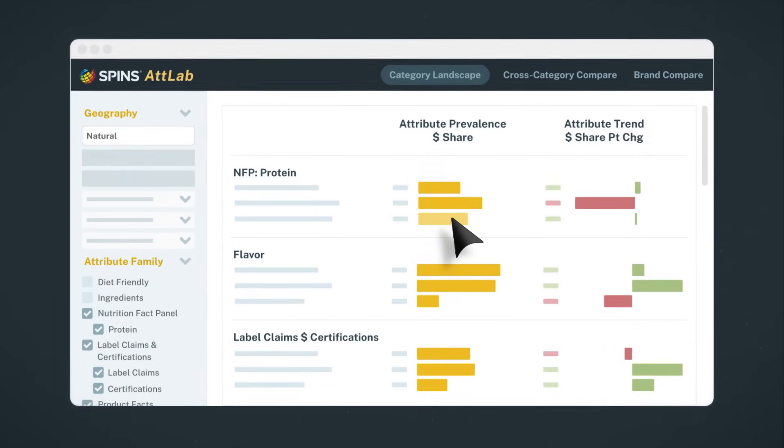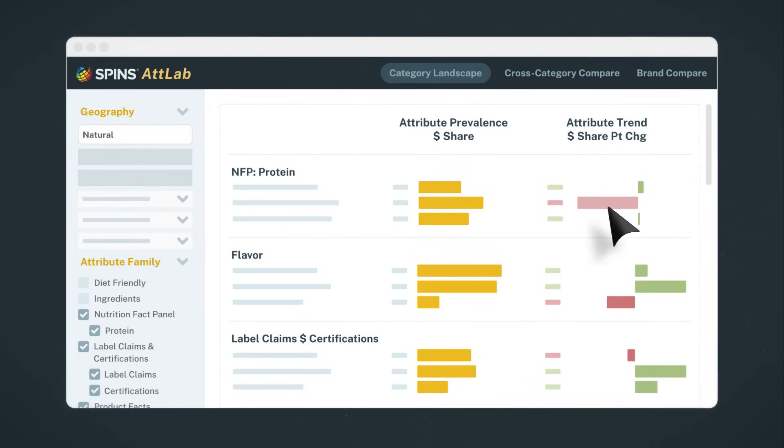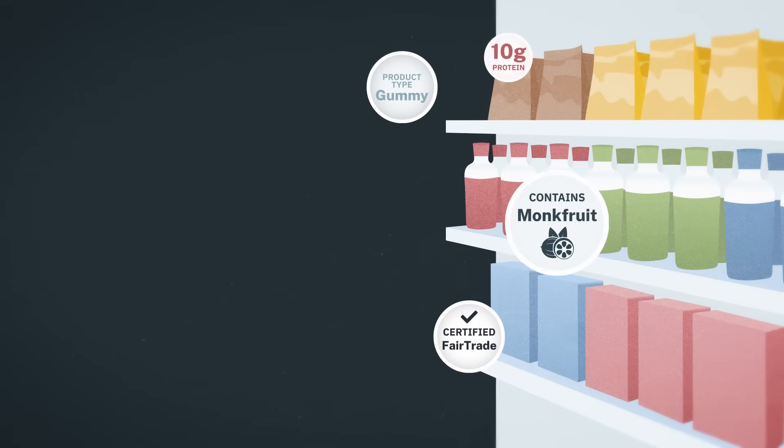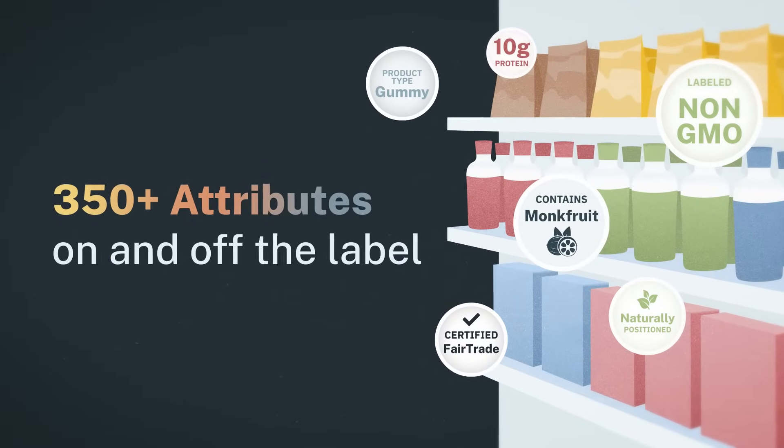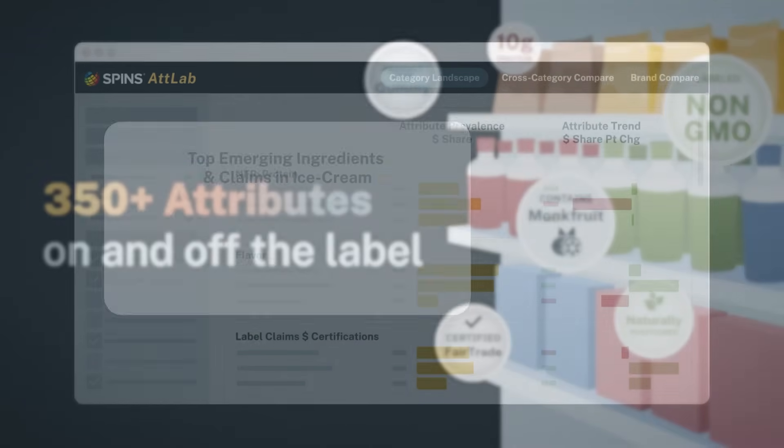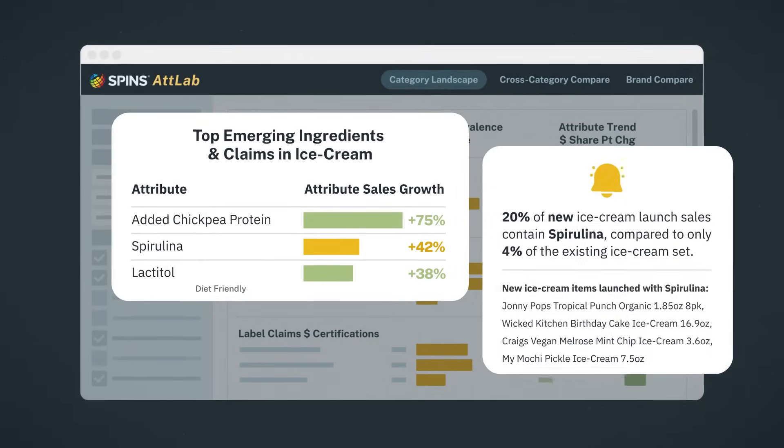It gives you visibility into every category across the total store, and allows you to see the real trends with more than 350 attributes from on and off the label, so you can align with consumer trends.